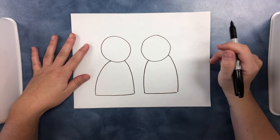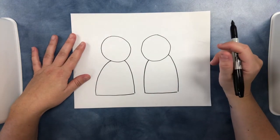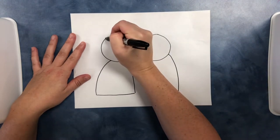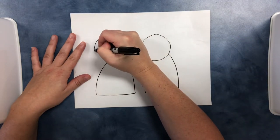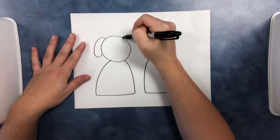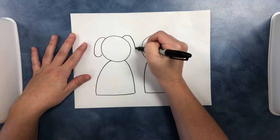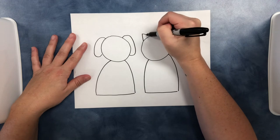Now let's go ahead and add the ears so we can tell the difference between which one's the dog and which one's the cat. The dog is going to have round ears, and our cat is going to have triangle ears.